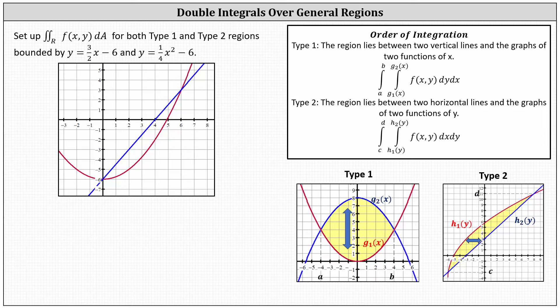Type 1 and type 2 indicate the order of integration. For type 1, the region lies between two vertical lines and the graphs of two functions of x. The order of integration is first with respect to y, then with respect to x. Because we integrate with respect to y first, notice the limits of integration for y must be functions of x. Looking at the graph, we integrate vertically first and then horizontally.